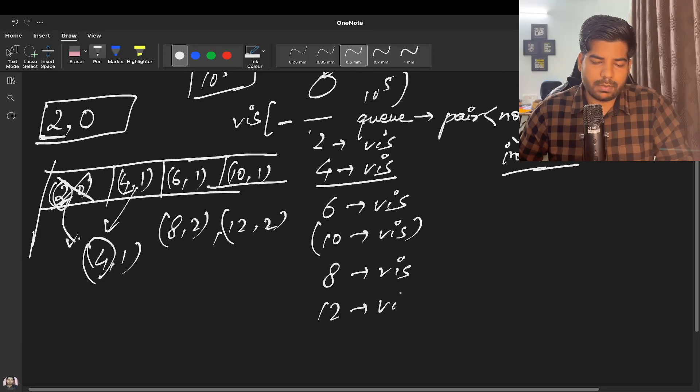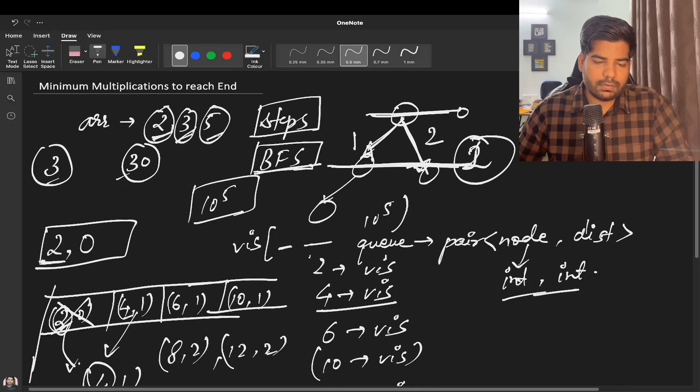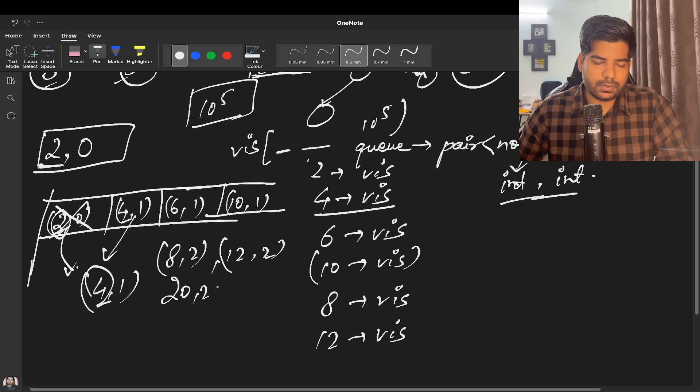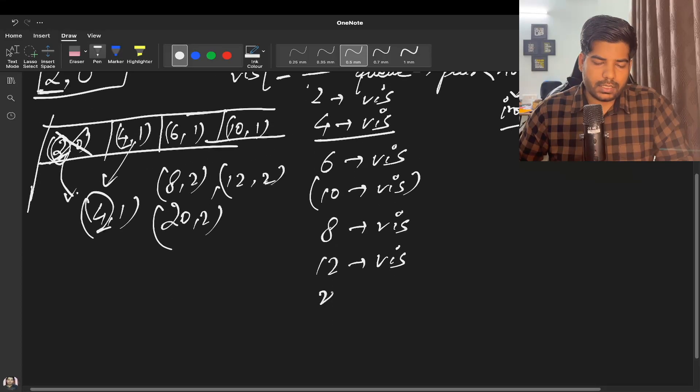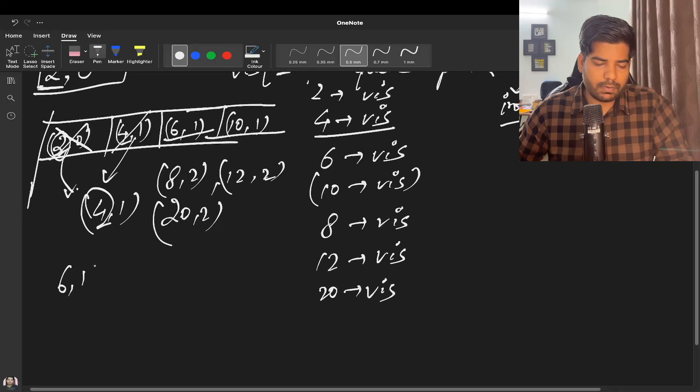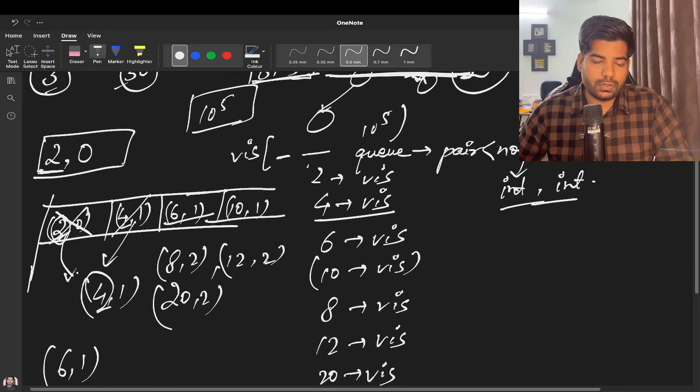We again take 4, multiply with 3, we get 12 with number of steps as 2. Mark it as visited. Then we take this 4, multiply it with 5, we get 20 with steps 2. So again mark this 20 as visited. Next time you go to 6, you take this out of the queue. So 6, 1 comes out. You multiply 6 with 2, you get 12 with step 2. But since 12 was already visited, we will not do anything.